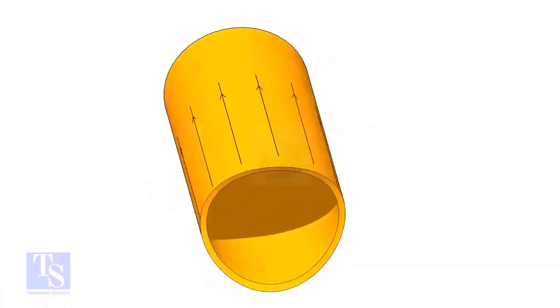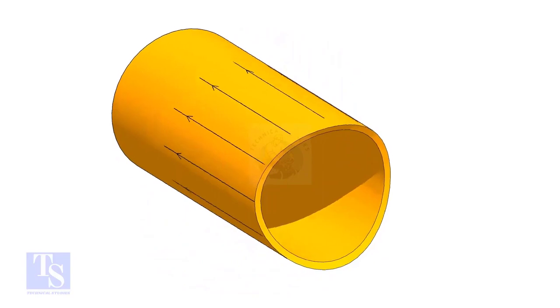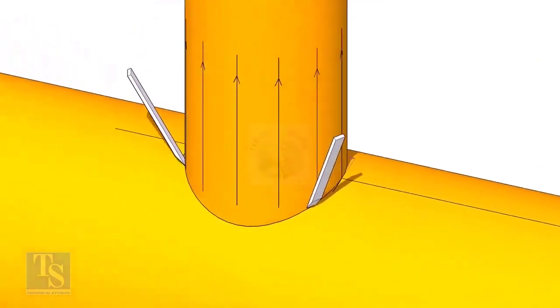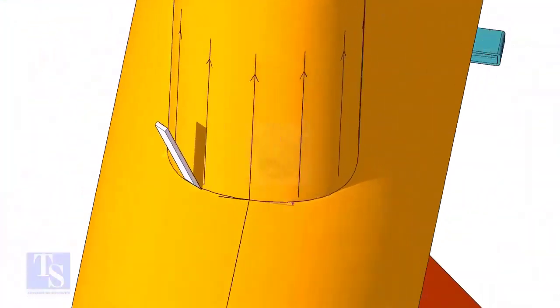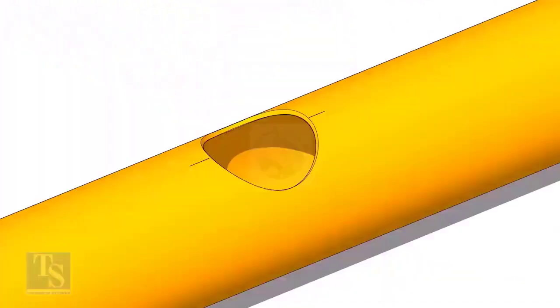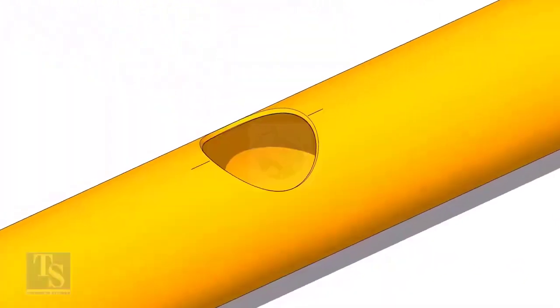After cutting and grinding the notch on the branch pipe, put it on the header. Make sure it is exactly in its position and mark the opening on the header as shown.